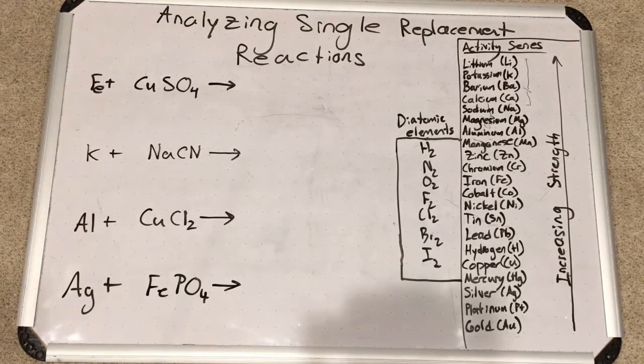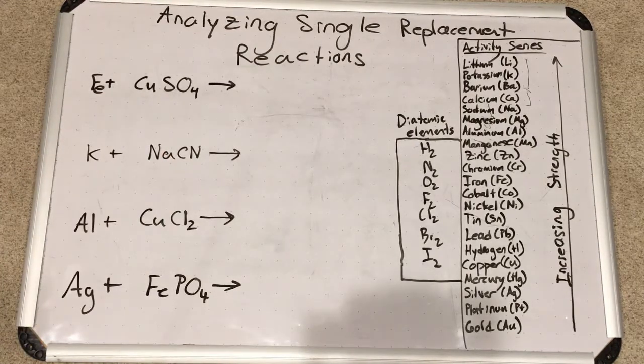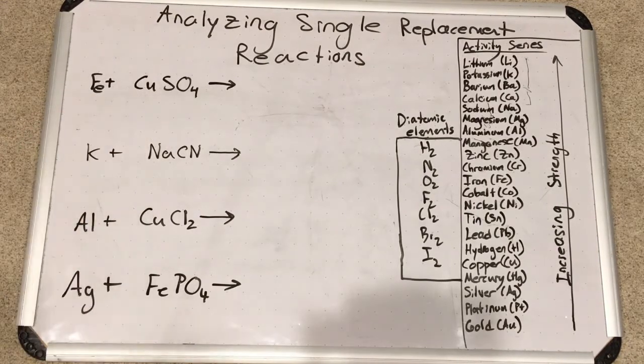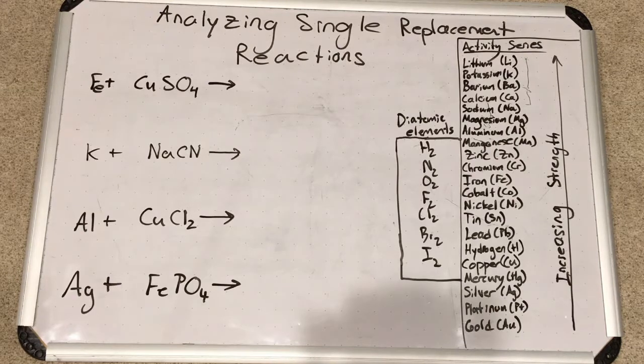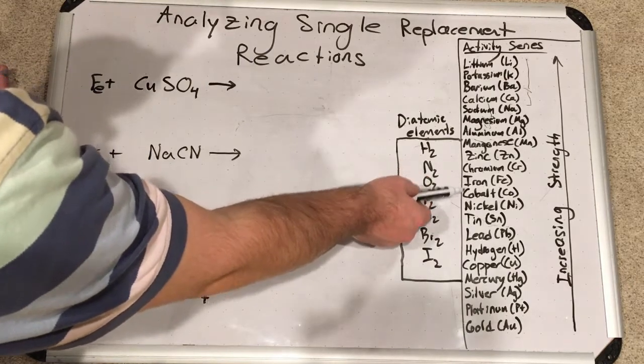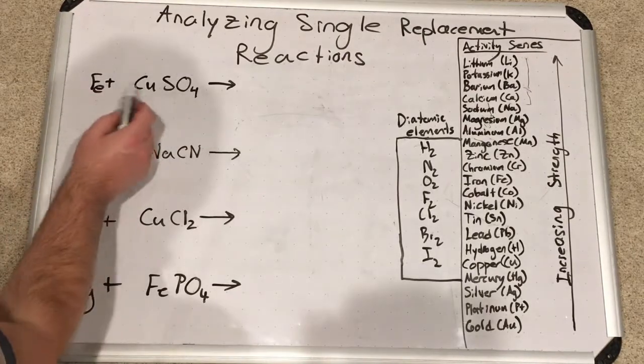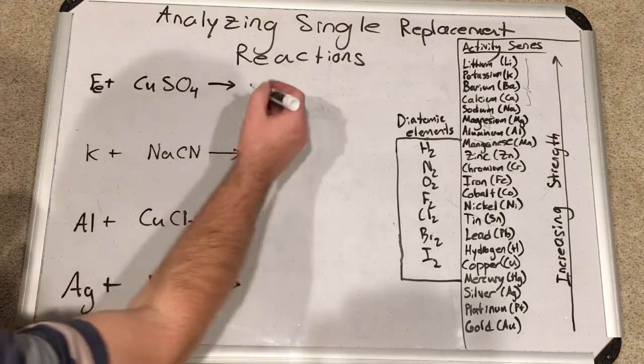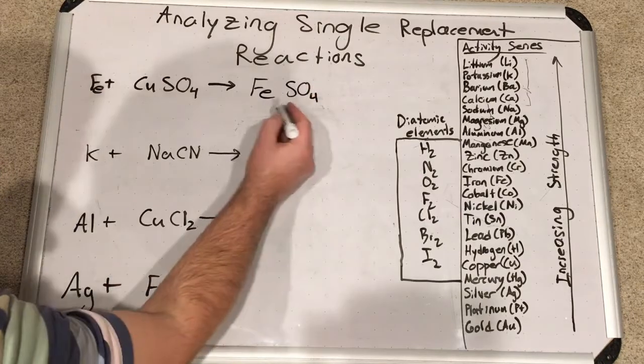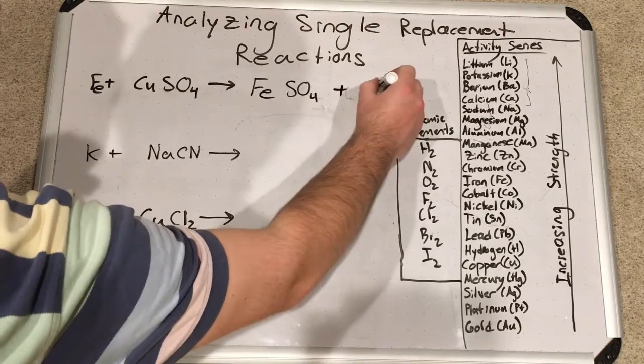All right, so we'll look at some examples here. This first example, we have iron plus copper sulfate. So what we're doing again is we're making sure iron is higher up on the activity series than copper, which is the cation in the compound there. Now let's look at the activity series. Where is iron? Iron's right here. If copper is below that, which it is, iron will knock out copper. So for this to occur, we will switch the positions of these two metals here. So we will now have iron sulfate. We'll have to charge balance this plus copper.